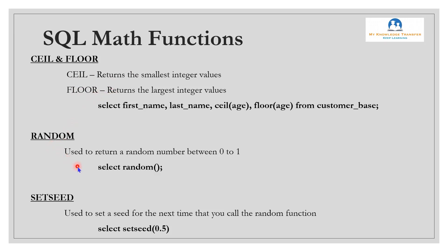RANDOM: this command is used to return a random number between 0 and 1. SET SEED: used to set a seed for the next time you call the random function. For example, select set_seed(0.5) — the next time you run select random, it will return the seeded value.